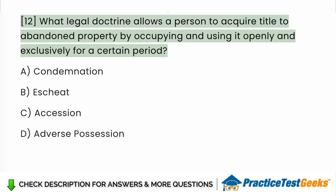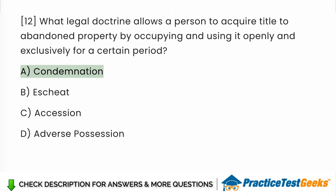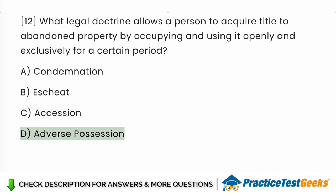What legal doctrine allows a person to acquire title to abandoned property by occupying and using it openly and exclusively for a certain period? a. Condemnation. b. Escheat. c. Accession. d. Adverse possession. Answer: c. Adverse possession.